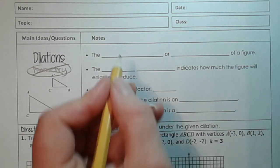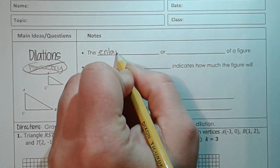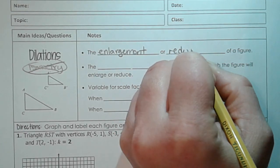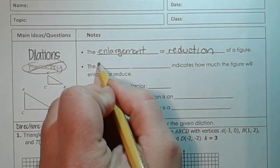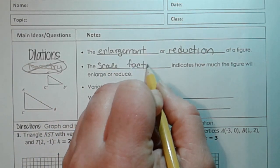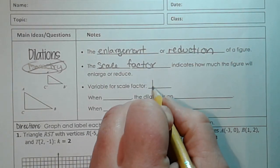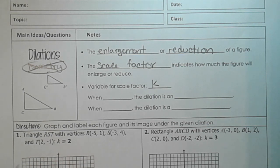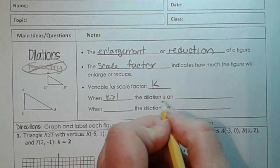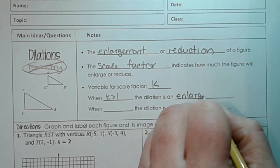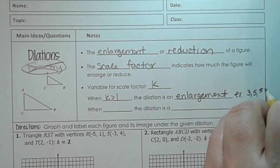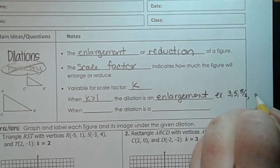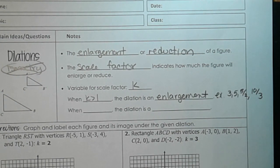So the dilation is either the enlargement or reduction of a figure, and we actually know how big or how small we're going to do it by something called the scale factor. The scale factor has a variable of k. So if k is bigger than 1, then the dilation is an enlargement. Some examples would be 3, 5, 5 halves, 10 thirds. Any of those are bigger than 1, so any of those would make your shape bigger.